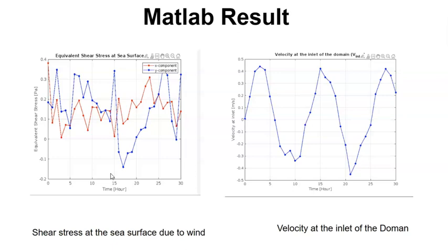On the other hand, the second graph shows the velocity at the inlet of the domain over a 30 hours time period. The positive and negative of the flow indicates the water into the domain and away from the domain.